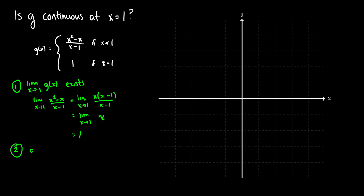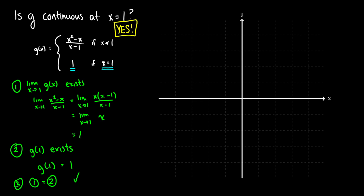Now let's check that g of one exists. The piecewise definition says if x equals one, the output is one. So g of one equals one. The limit as x approaches one of g of x exists, g of one exists, and the limit equals g of one — both equal one. Since all three conditions are met, g is continuous at x equals one.